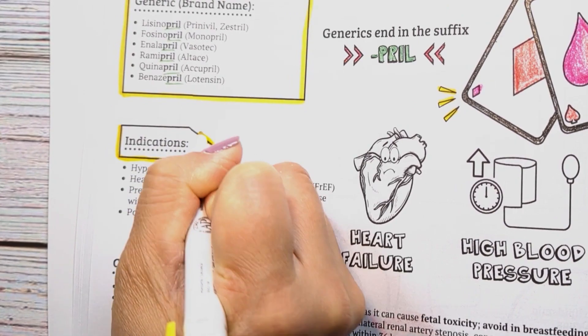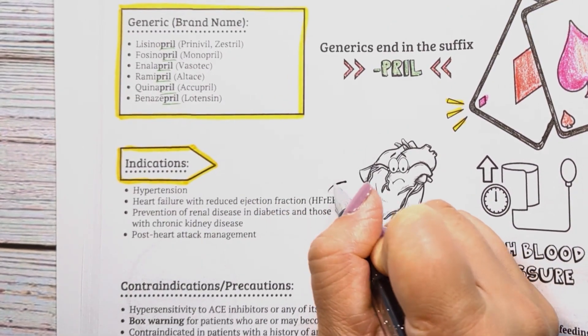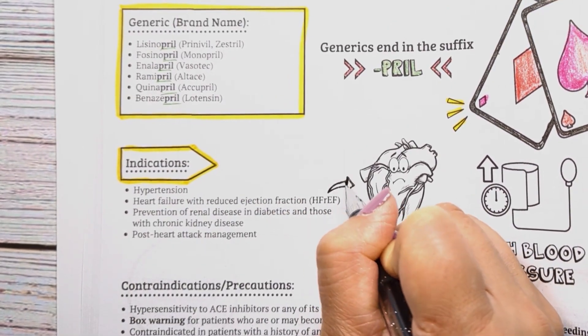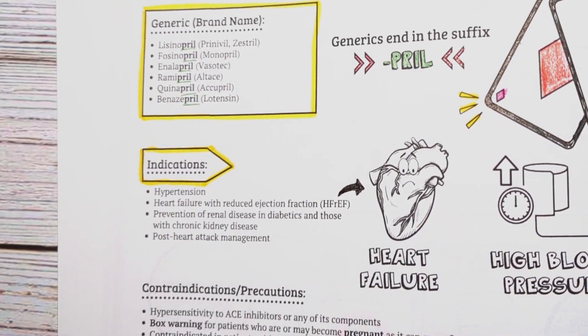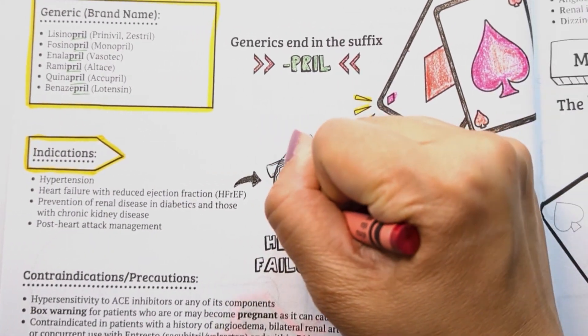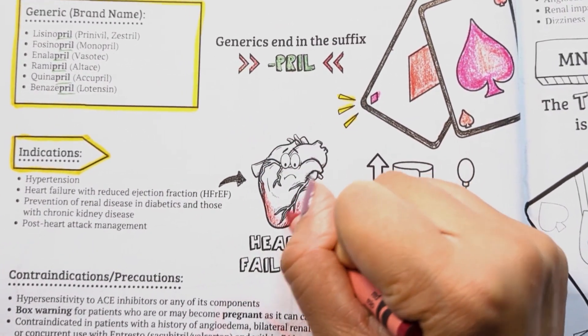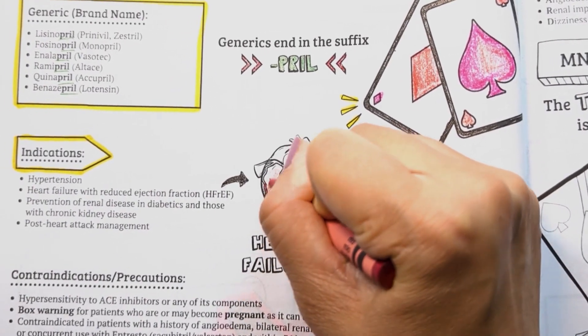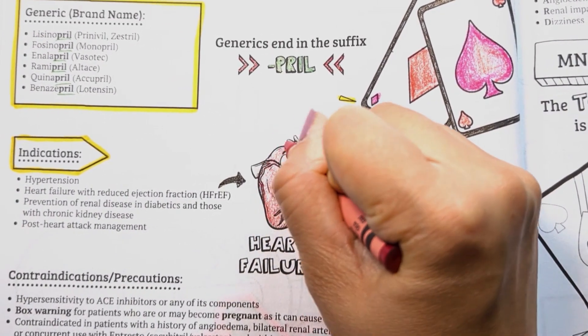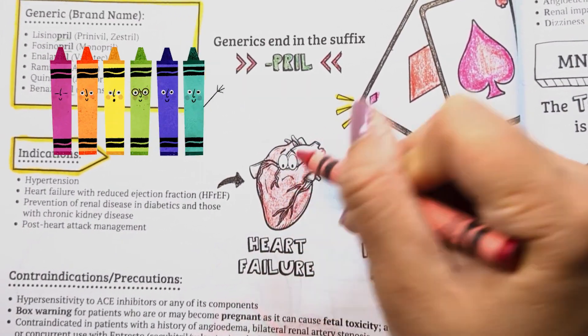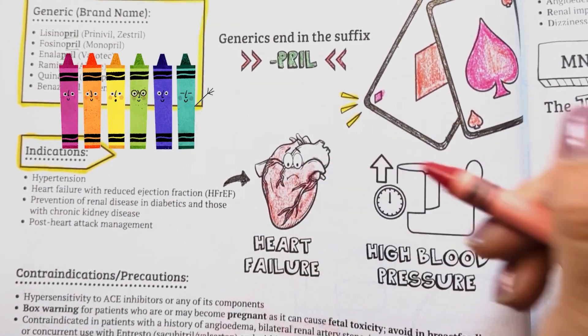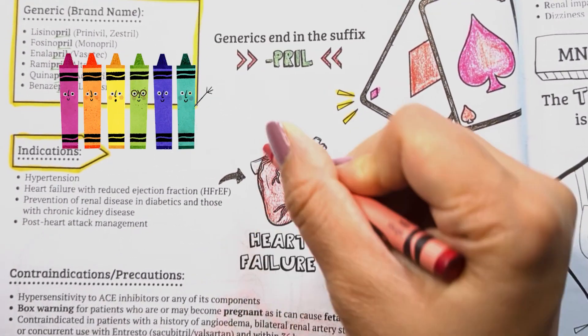The drugs in this class are used for hypertension, heart failure with reduced ejection fraction, prevention of renal disease in diabetic patients, as well as heart attack management. Color in these images to help you retain this information.